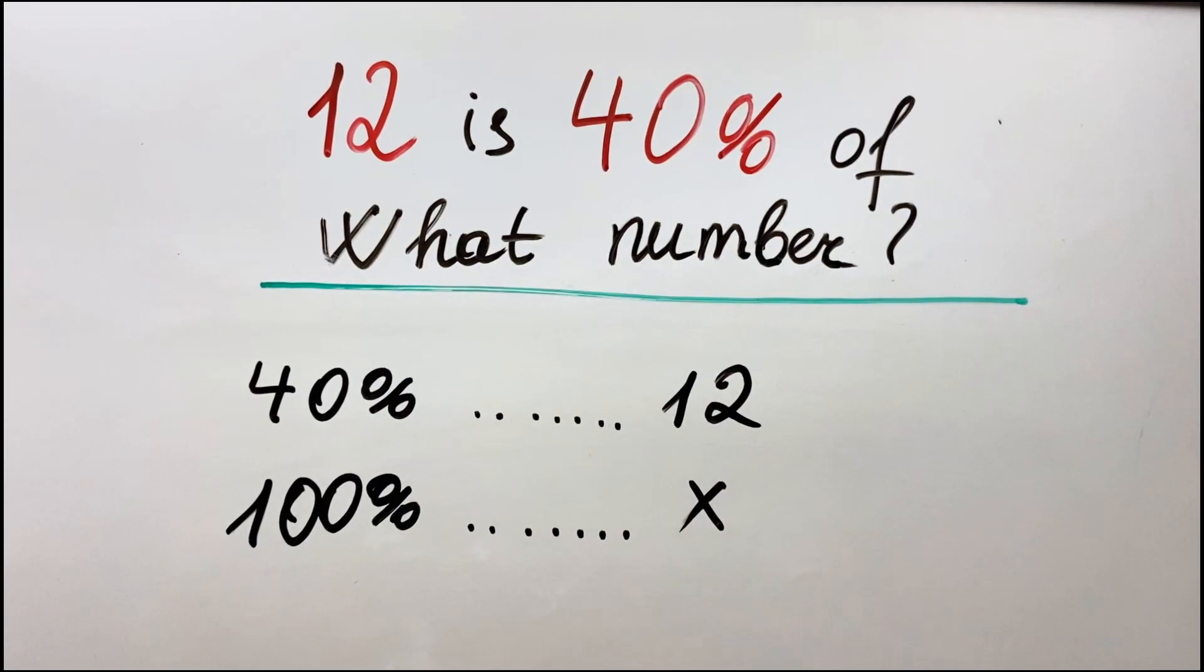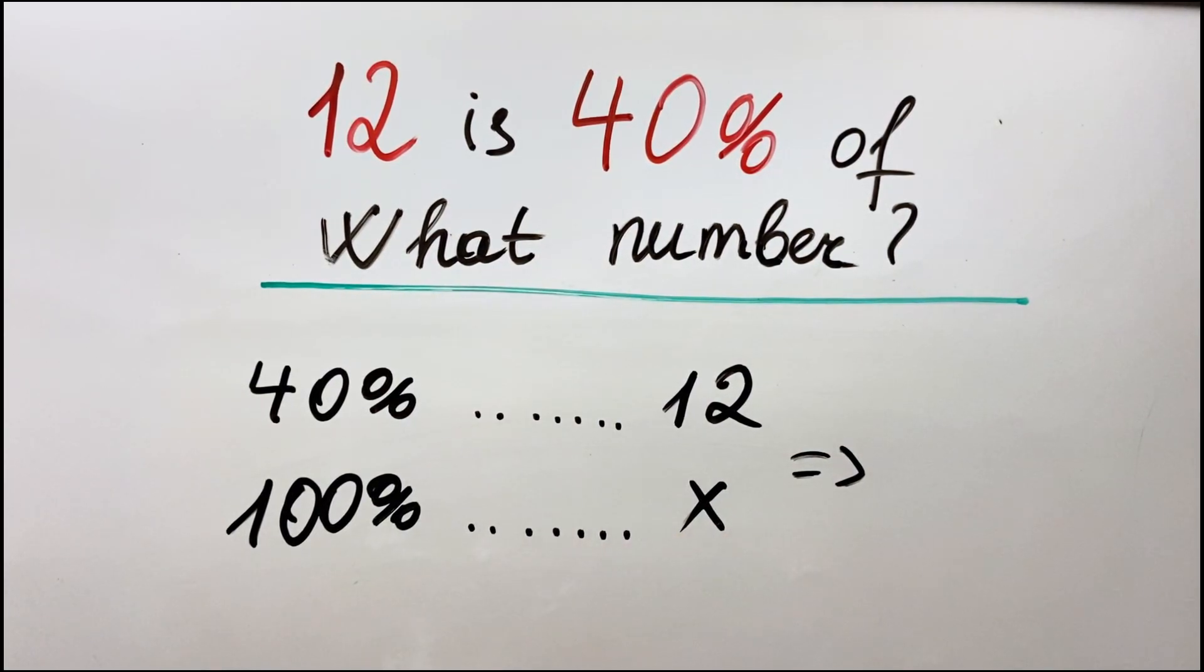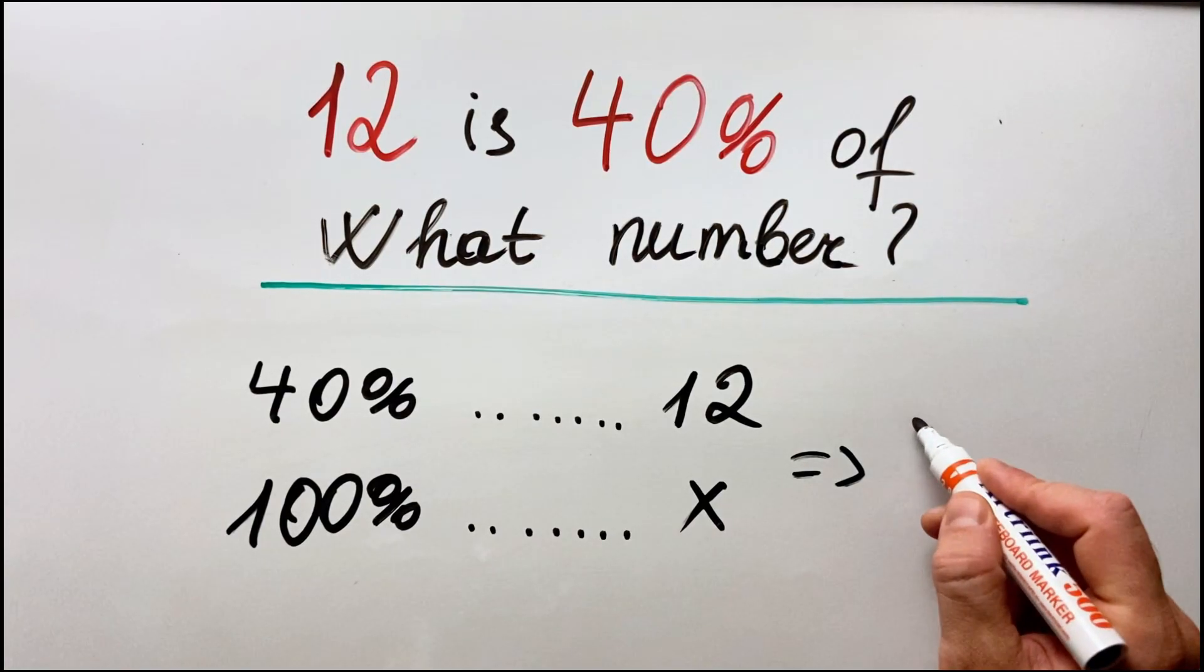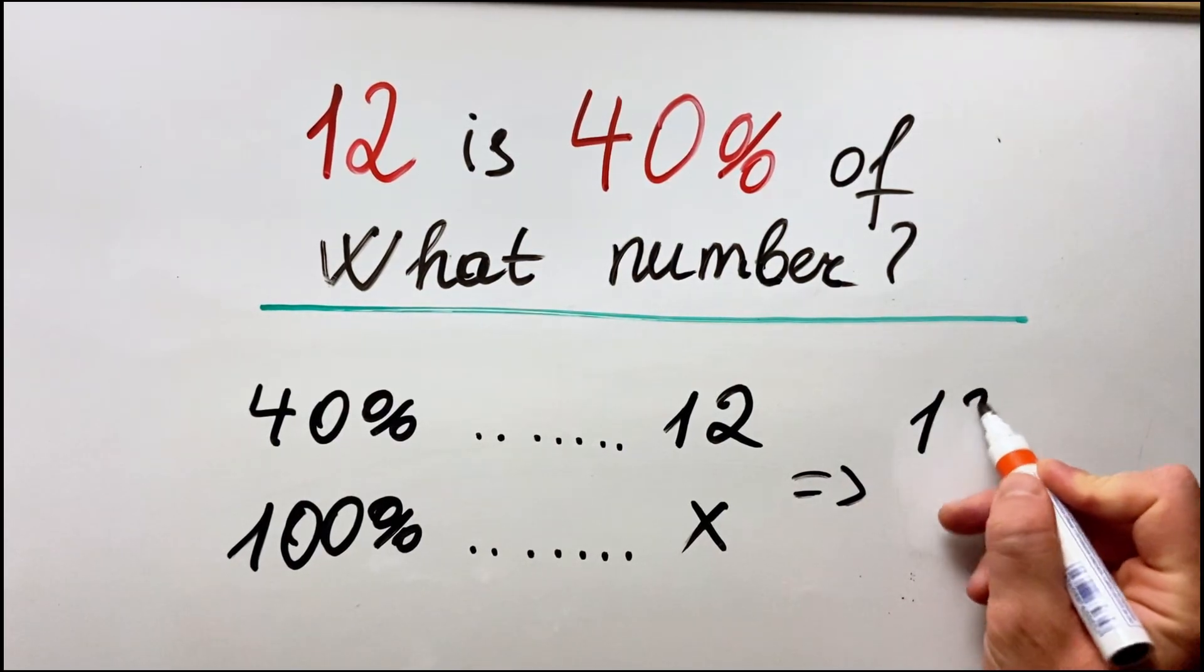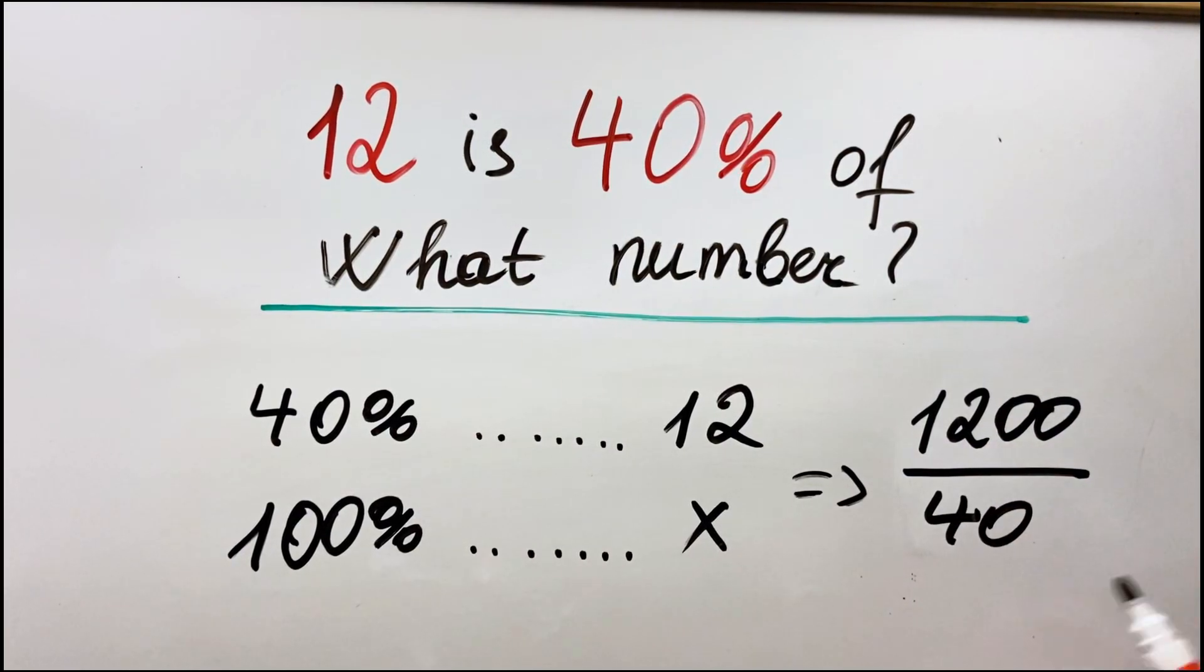It's x. So basically it results in the same way we solved the equation. So we have 12 multiplied by 100 divided by 40, which is 1200 divided by 40, and of course the answer is 30.